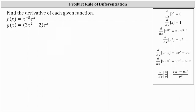We're asked to find the derivative of each function. Let's begin with f of x equals x to the power of negative 5 times e to the x. Because we have a product, we need to apply the product rule of differentiation to find f prime of x.